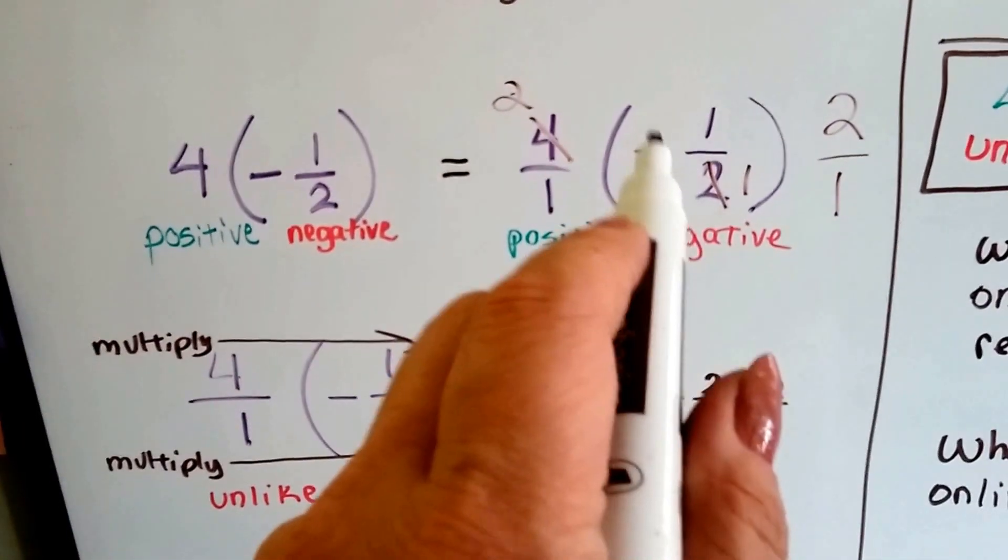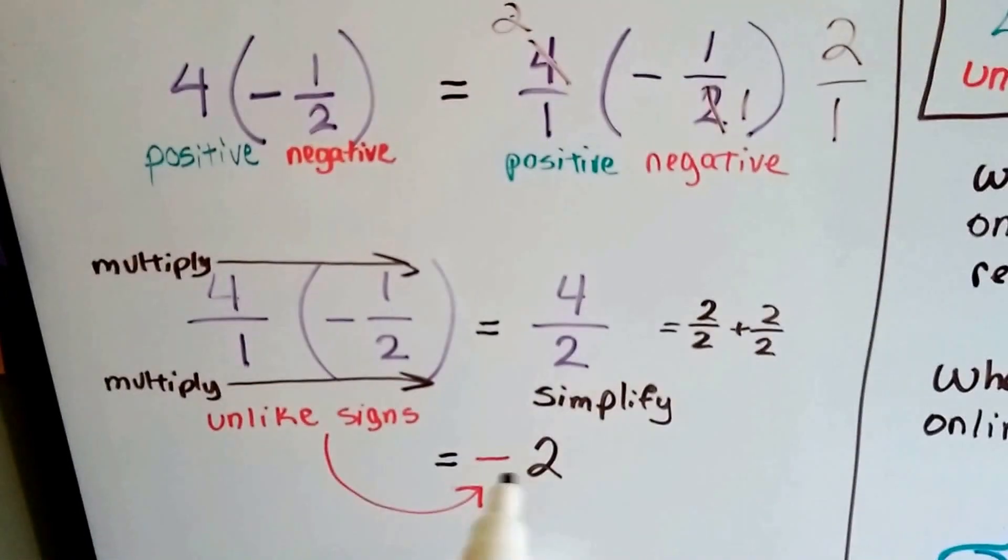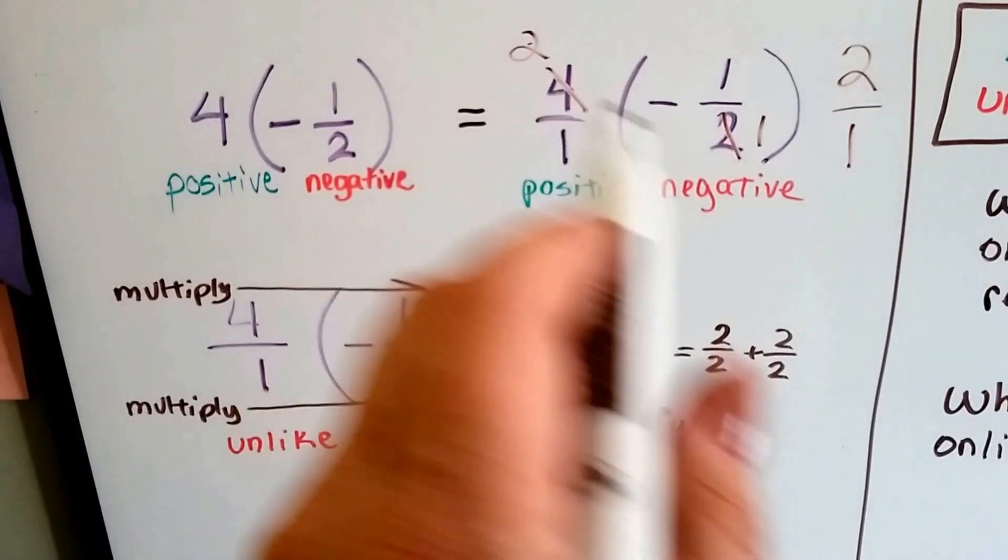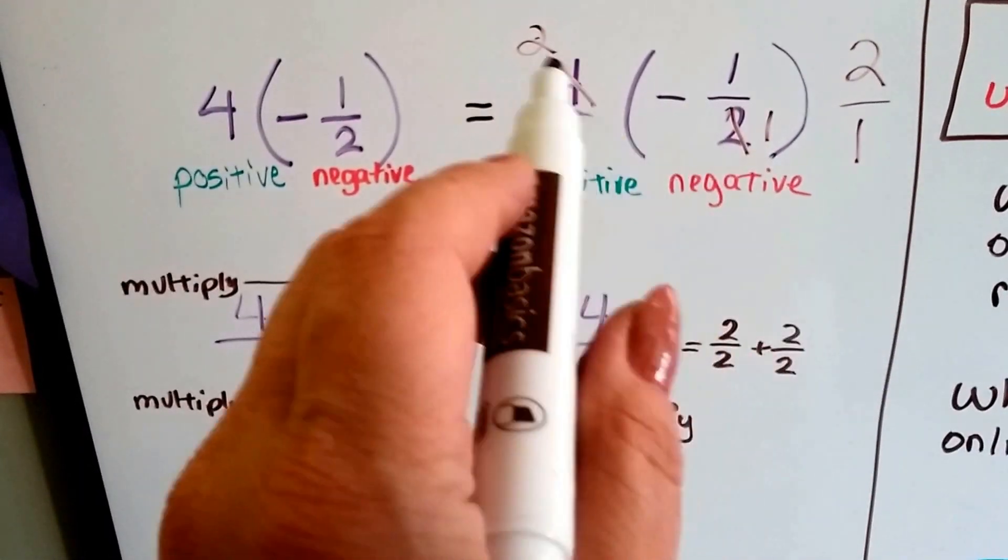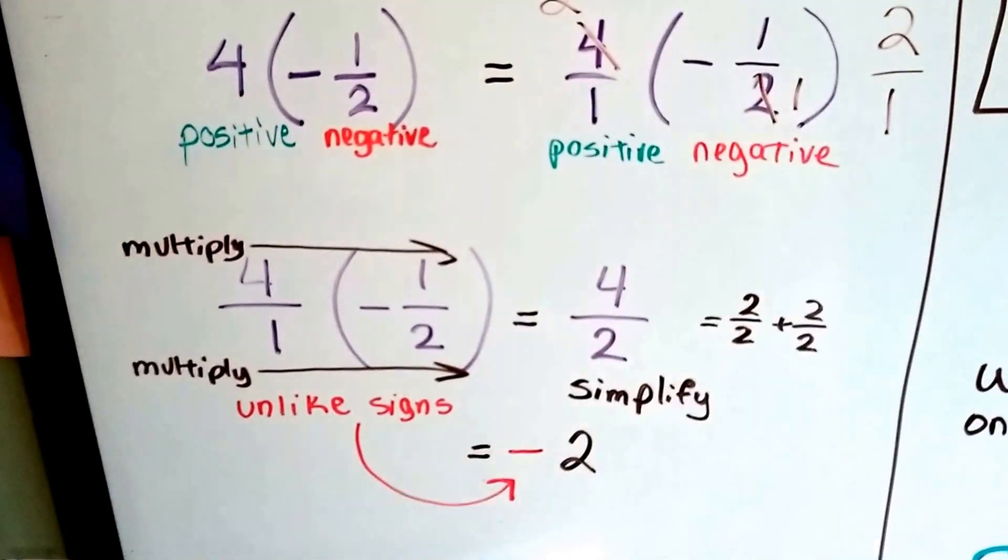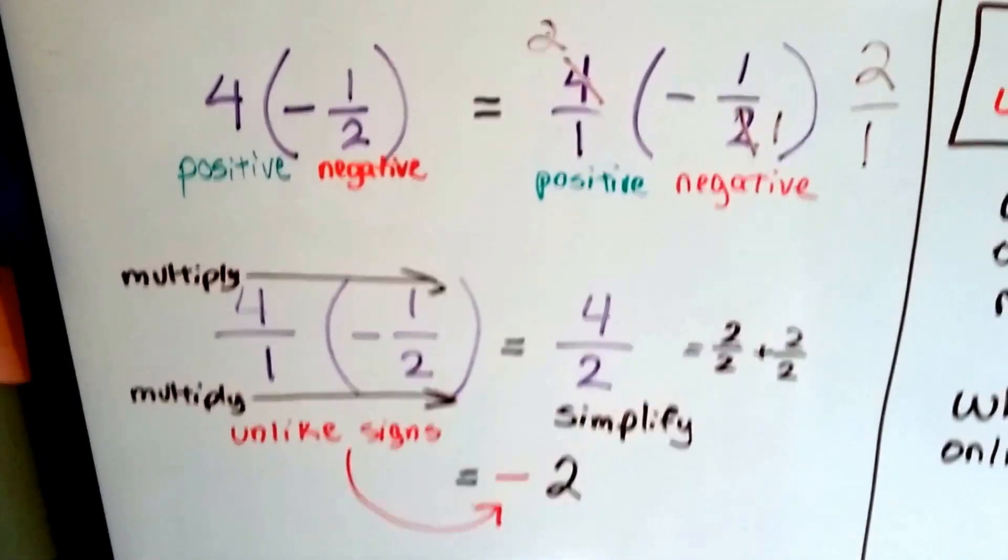This is a quicker way to do less reducing and simplifying at the end of a math equation. When you can cancel out like this because you see some factors, it helps. You don't have to simplify as much. You can try that if you remember that from last year.